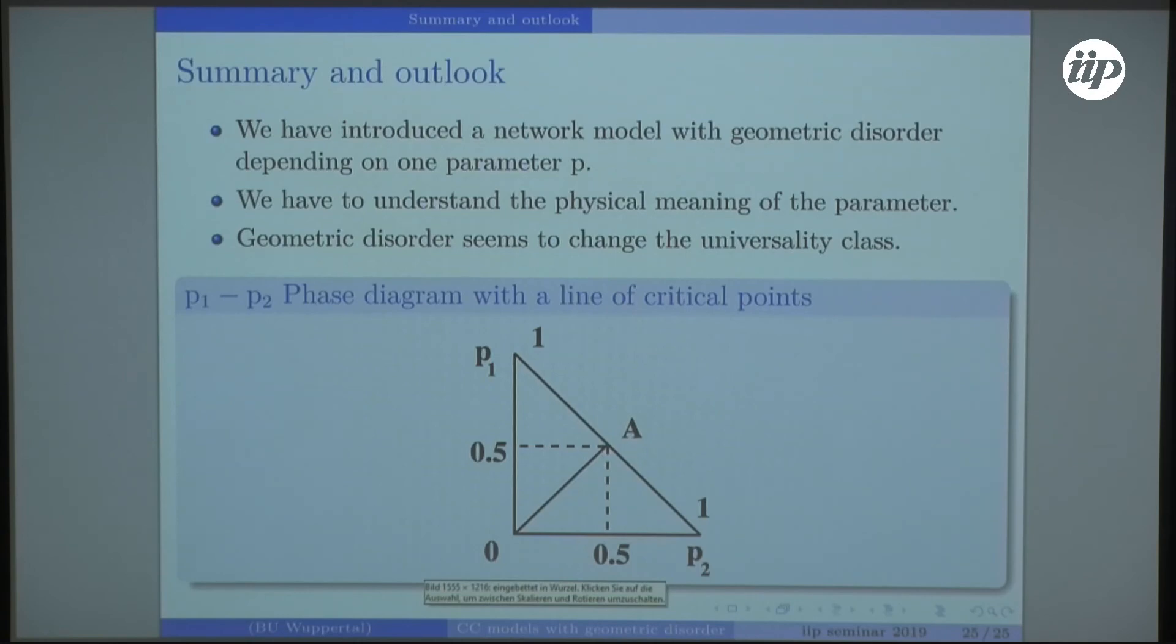We are coming close to the end. The summary is we have introduced a network with geometric disorder that is dependent on one parameter, and what definitely needs to be done is to understand the physical meaning of this parameter, the probability for setting R or T to an ordinary or to an enforced transmission or reflection. What also needs to be remarked is it appears because the index changes that we are changing the universality class by tuning this parameter.